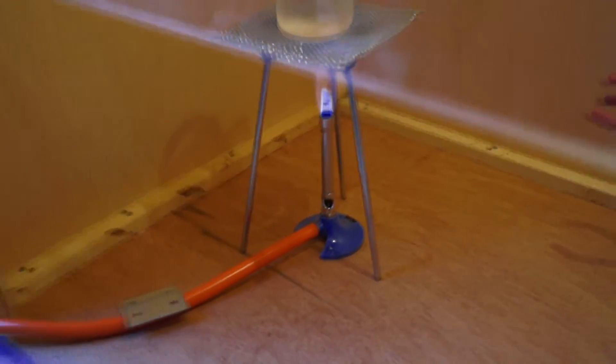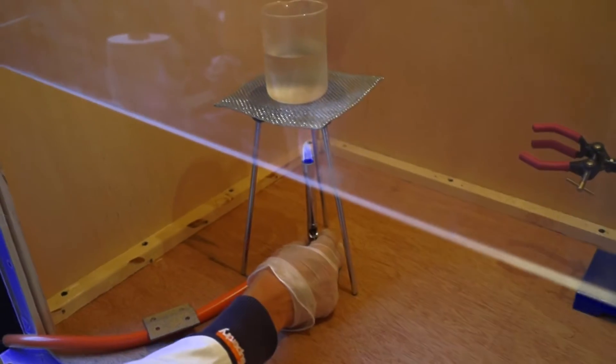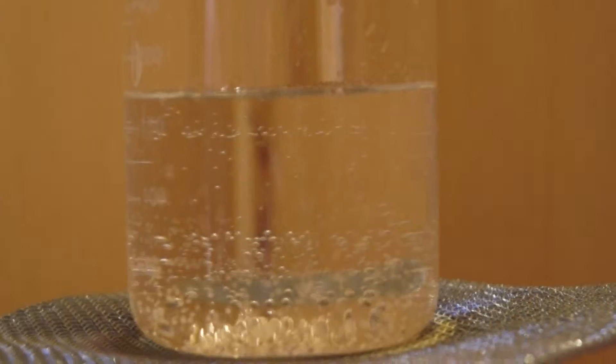You should then boil the remaining solution down to about 40-50ml to create a supersaturated solution of sodium acetate. This takes quite a while so you must be patient.